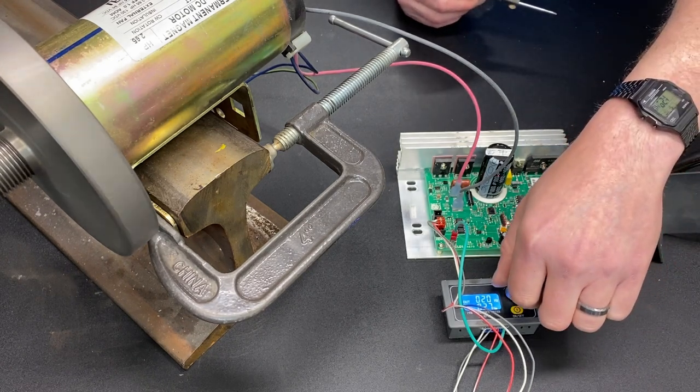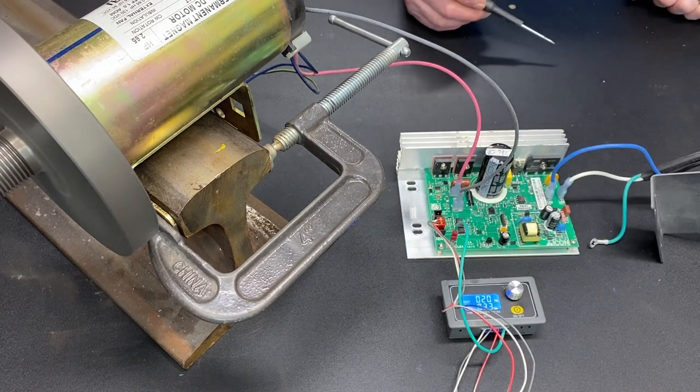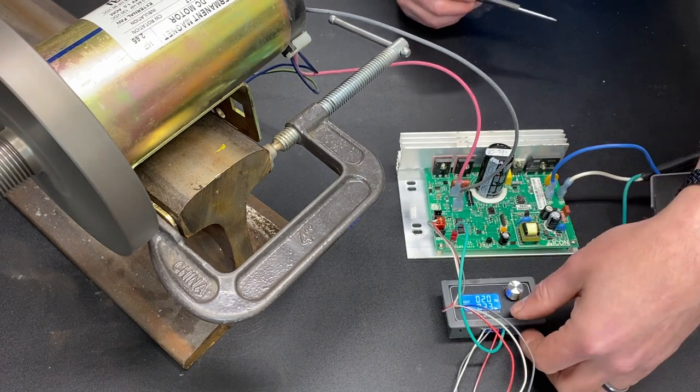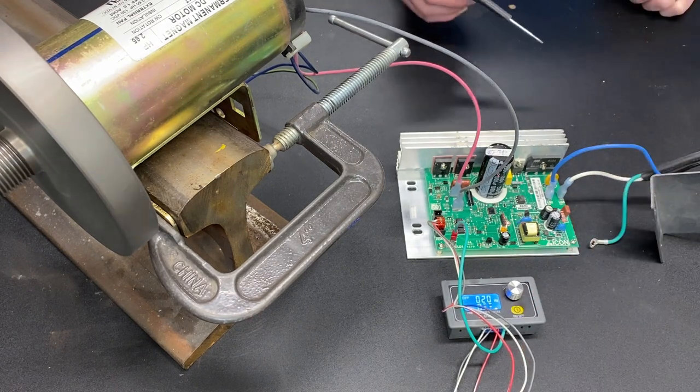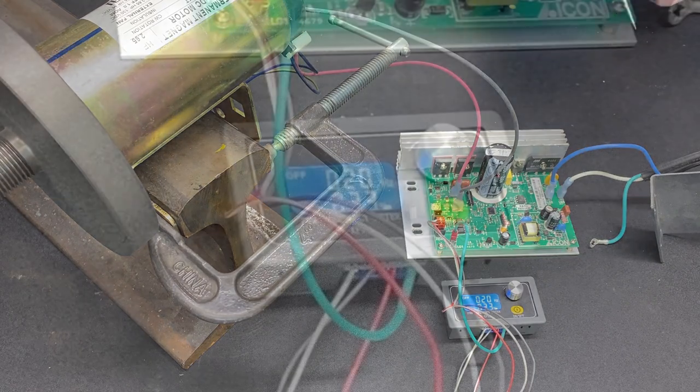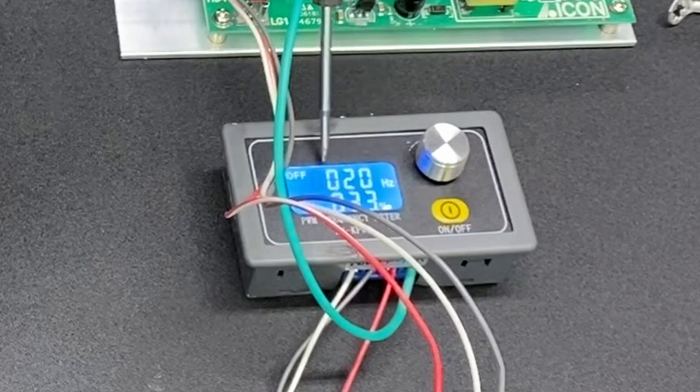And once it's running, you have the option to turn the dial and adjust the speed. Now one very important thing to note is that just like with the MC2100, you must set the signal generator at 20 hertz.